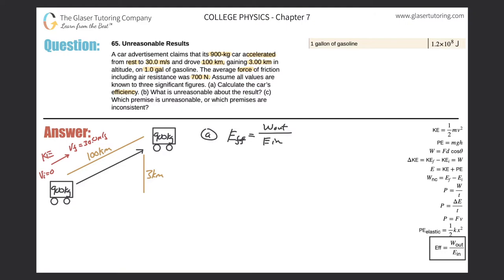Next, the gravitational potential energy of the car has also increased. It started at zero. It increased its altitude by three kilometers. So therefore now at this particular point, this car also has some potential energy due to gravity. So that is the second type of energy. Where did that energy come from? The gasoline.